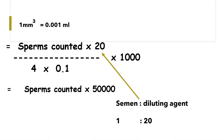Since 1 mm³ equals 0.001 milliliter, and we report concentration per ml, the whole thing should be multiplied by 1000 to give the number of sperms per ml. Additionally, the semen has been diluted at a ratio of 1:20, so the multiplication factor is 20. Multiplying these together gives us the formula: sperms counted × 50,000, which is the complete formula for sperm concentration.